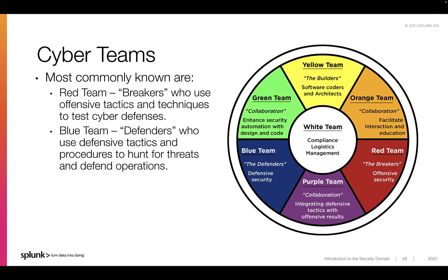I particularly like the InfoSec color wheel approach that April Wright presented at Black Hat in 2017, because it casts a wider network on who's responsible for security and reminds us that it is important to have robust collaboration across teams, including the yellow team, which refers to the builders or software coders. The more we think about security at all levels, the better prepared we will be when the next threat strikes, or at least we can minimize our chances of having a catastrophic loss.